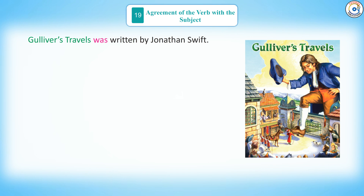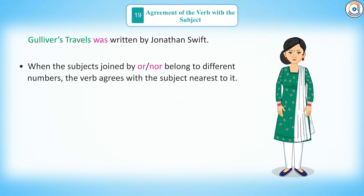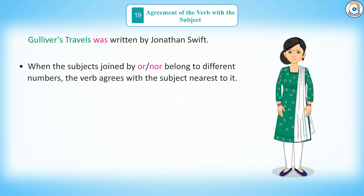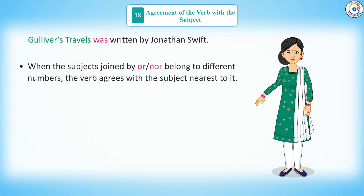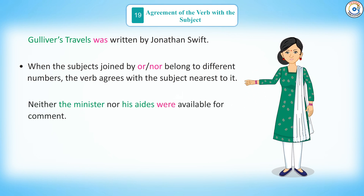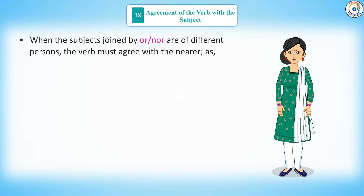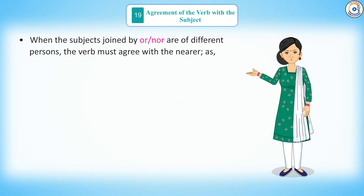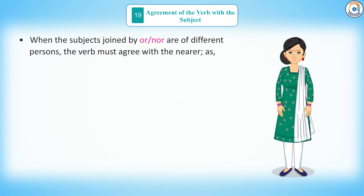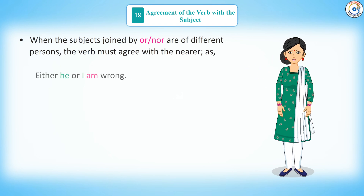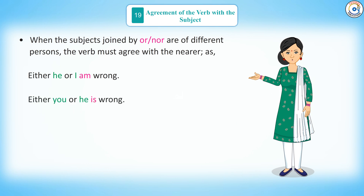Rule 8: when subjects joined by 'or' or 'nor' belong to different numbers, the verb agrees with the subject nearest to it — as in, neither the minister nor his aides were available for comment. Rule 9: when subjects joined by 'or' or 'nor' are of different persons, the verb agrees with the nearer subject — as in, either he or I am wrong; either you or he is wrong.